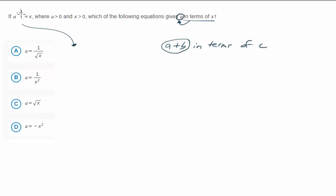a to the negative one-half: We know that a to the one-half, the positive one-half, is the square root of a, and we know that the negative exponent means this is the same as 1 over the square root of a.